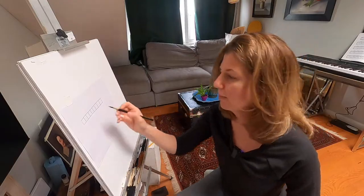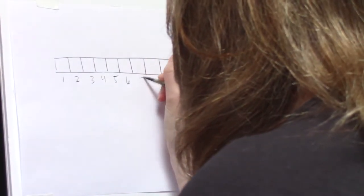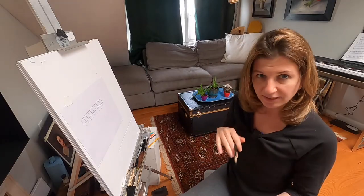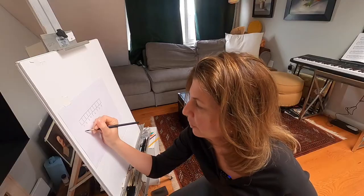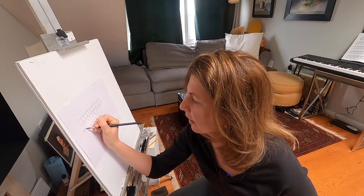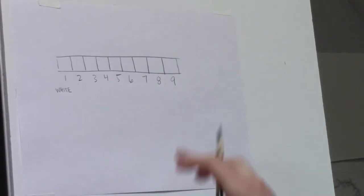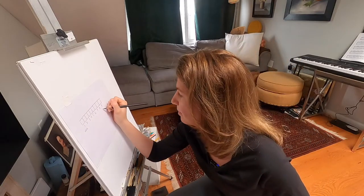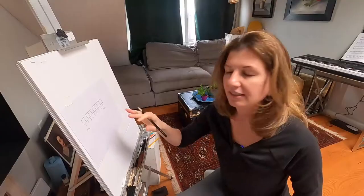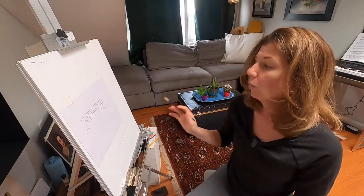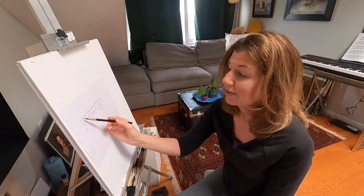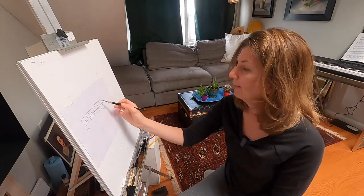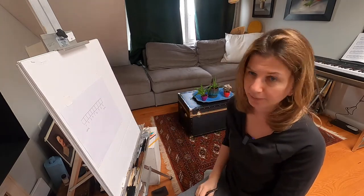I'm going to go ahead and number these boxes as well. It's important, especially if this is your first time working with a value scale, to understand what the one represents and what the nine represents. The one is going to represent the brightness of the paper — the white of the paper — so this is our whitest value. The nine is our darkest value, the darkest end of the scale.